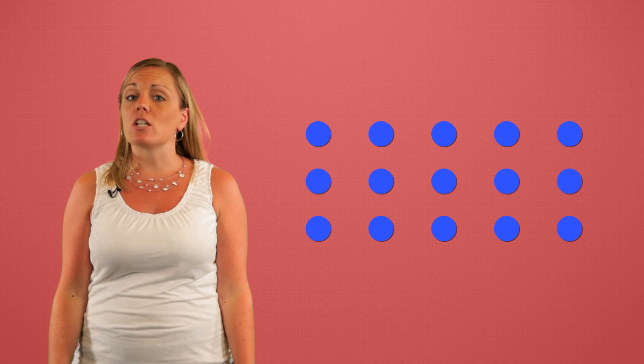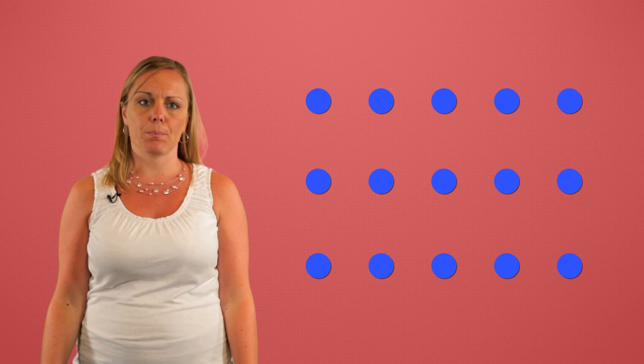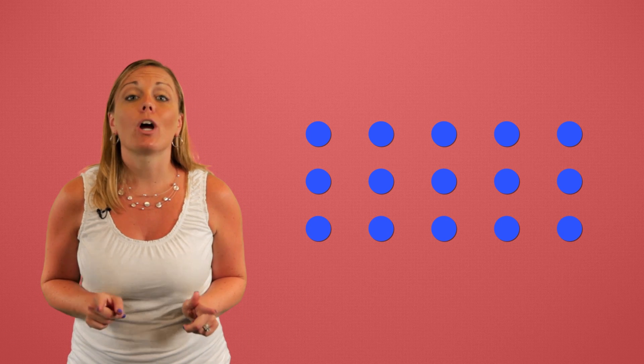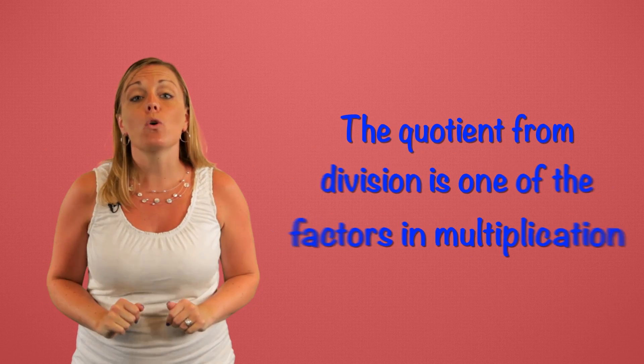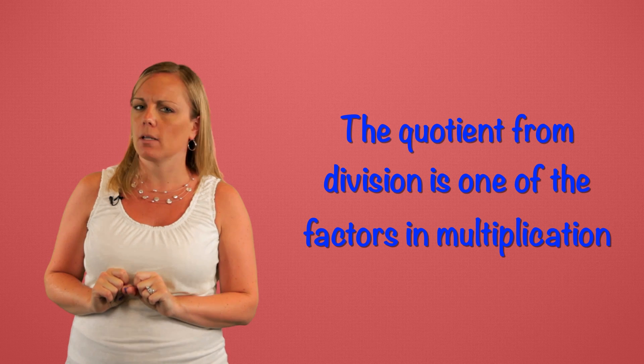So now we're seeing how multiplication and division work together. Division starts with the total then breaks the total into groups. Multiplication starts with the number of groups and the size of the groups and then brings us back to the total. They work with the same elements but in reverse. So the quotient from division is one of the factors in multiplication.